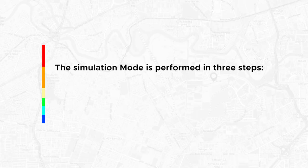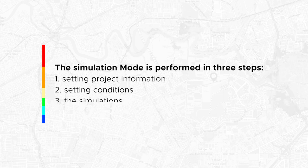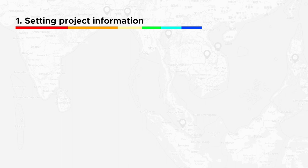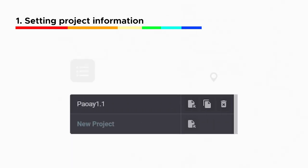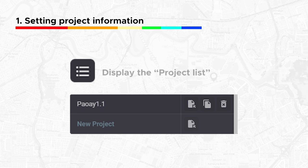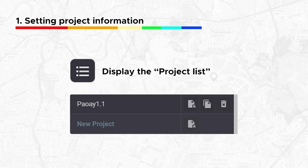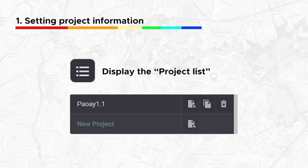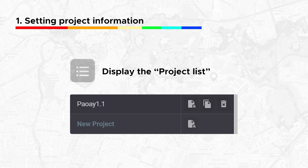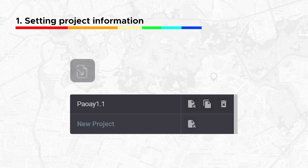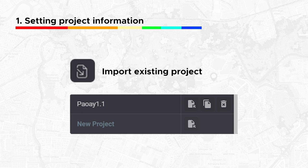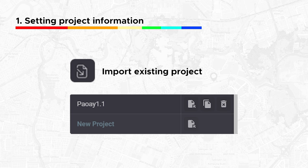Step 1 — Setting Project Information: The user selects the Project button on the left to display the Project List, where they can select and simulate a new project or interact with an existing one. Options for existing projects include Copy and Delete. The Import Project button allows users to import an existing project, enabling collaborative efforts between individuals and organizations without compromising registered accounts.